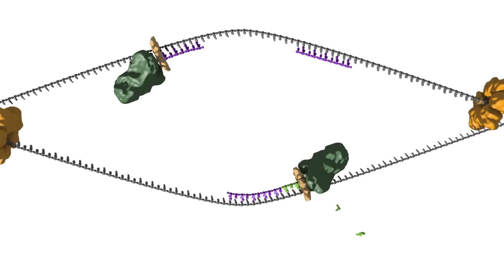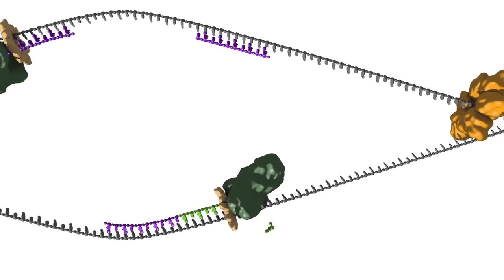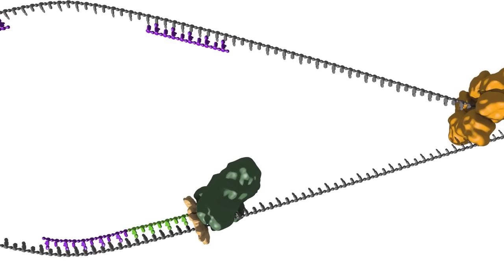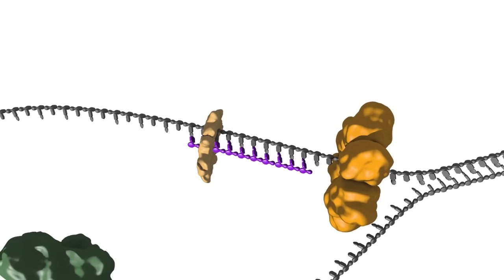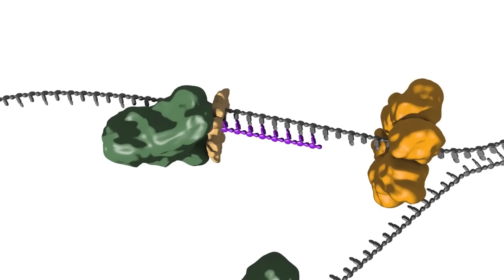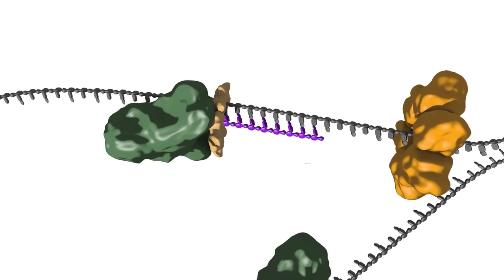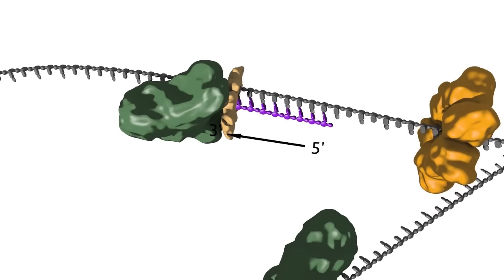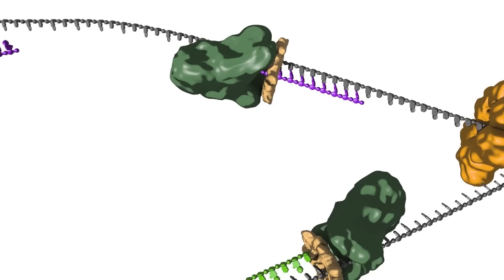Let's focus on just the right hand fork for the moment, as the processes at both forks are identical. Polymerases are loaded onto both the top and the bottom DNA strands at the fork. Because polymerases only synthesize DNA in the five prime to three prime direction, the two strands must be copied in opposite directions.